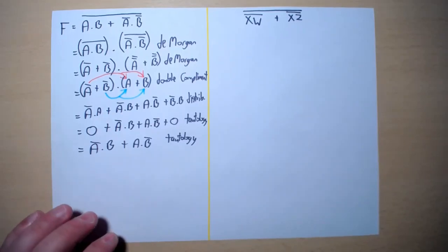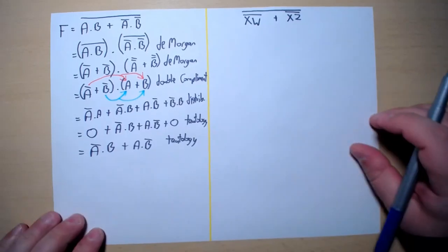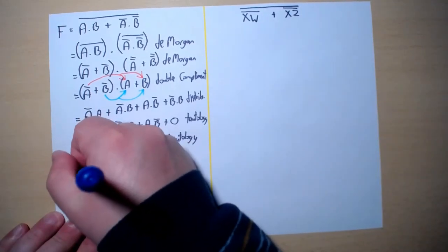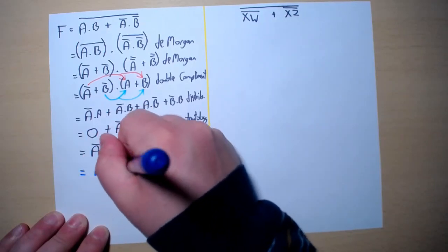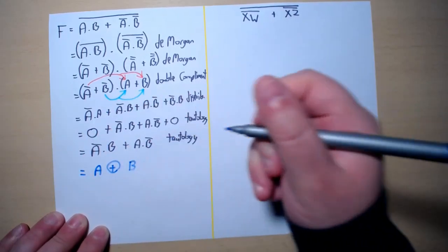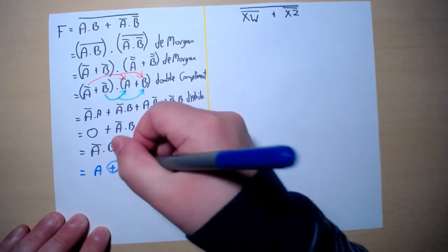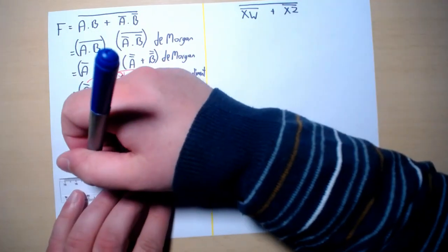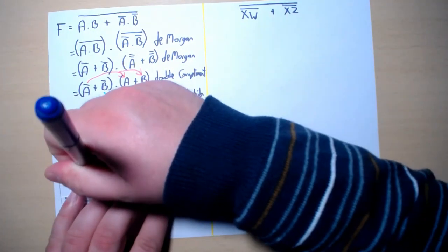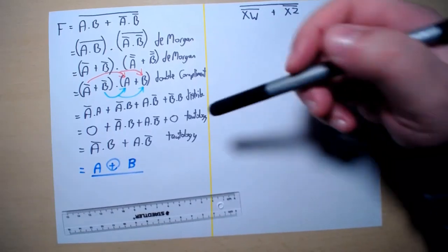And this exclusive OR is implemented using this pattern of gates, using this Boolean expression. So if you want to continue and simplify this and obtain it as a single gate expression, you can write it down as A XOR B.